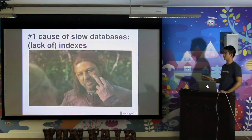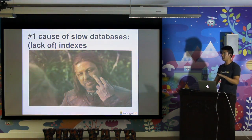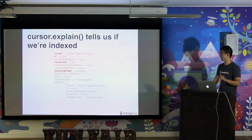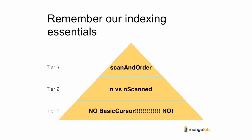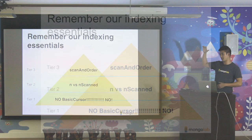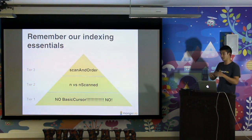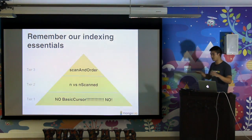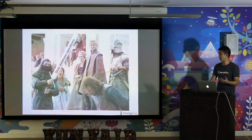The biggest reason for slow databases that we see is lack of indexes. Developers just like to push data to the database, start querying, and it's fine at small scale. Once you get into production, it's a disaster. Cursor explain tells us what indexes we're using. The highlighted fields are very important. At the very bottom, if you see 'basic cursor' — absolutely not. You need to make sure your queries are indexed. If you see basic cursor, that means you're doing something wrong. N means the number of documents returned from your query; N scan is how many documents need to be scanned. Ideally, if you have the right indexes in place, N versus N scan should be very small. Finally, 'scan in order' — if you query something and you need to sort it, scan in order means you're sorting in memory, which is also very taxing on the system.